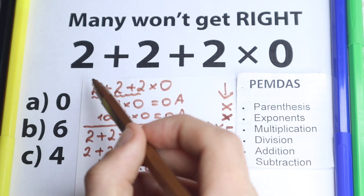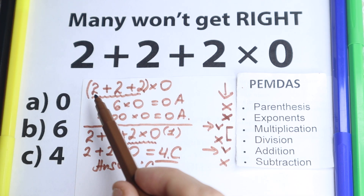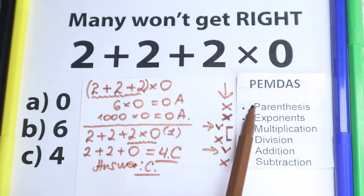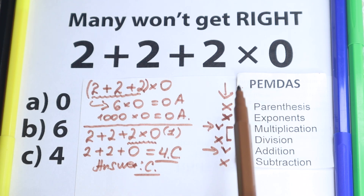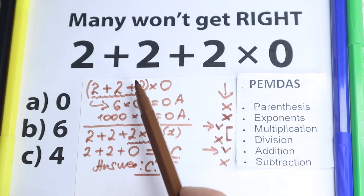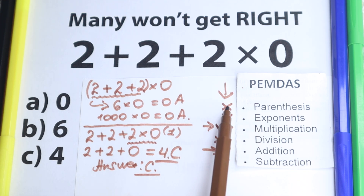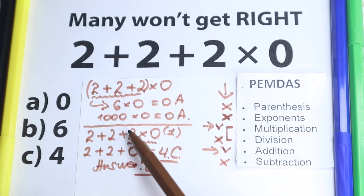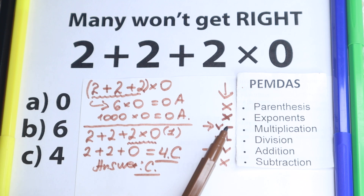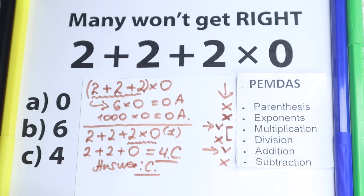One important note: if you put parentheses around 2 plus 2 plus 2 and then times 0, you would start from those parentheses and the correct answer would be 0 — that's a great trick to know. But here we don't have parentheses, so multiplication comes before addition. As you can see on this paper, multiplication is before addition — most people forget that. I hope your answer was 4, but don't feel bad if you got 0. Wish you all the best in your math journey, see you in the next video, take care and have a great day!